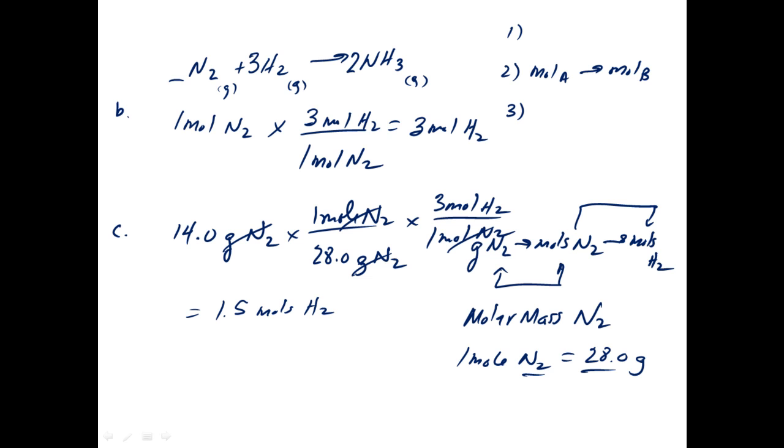Part E for conditions outlined in part D, how many grams of product would be formed. So in part C, what we did, we did step number one. We converted grams of A to moles of A. Then we did part two, or step two, which is convert moles of A to moles of B. We converted from moles of nitrogen to moles of hydrogen. The last step is, if it's required, is to convert from moles of B to grams of B. So we know how many moles of hydrogen would be formed.